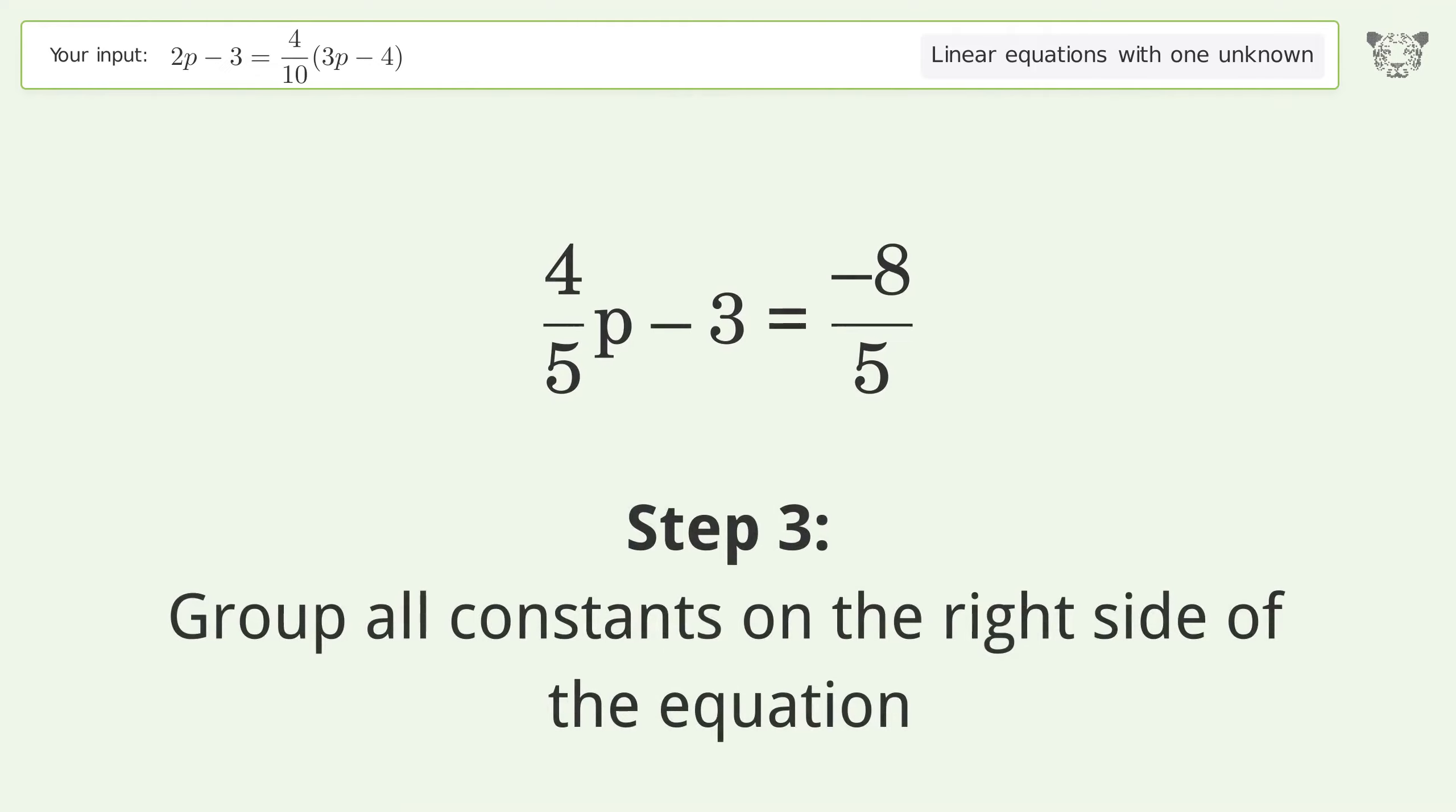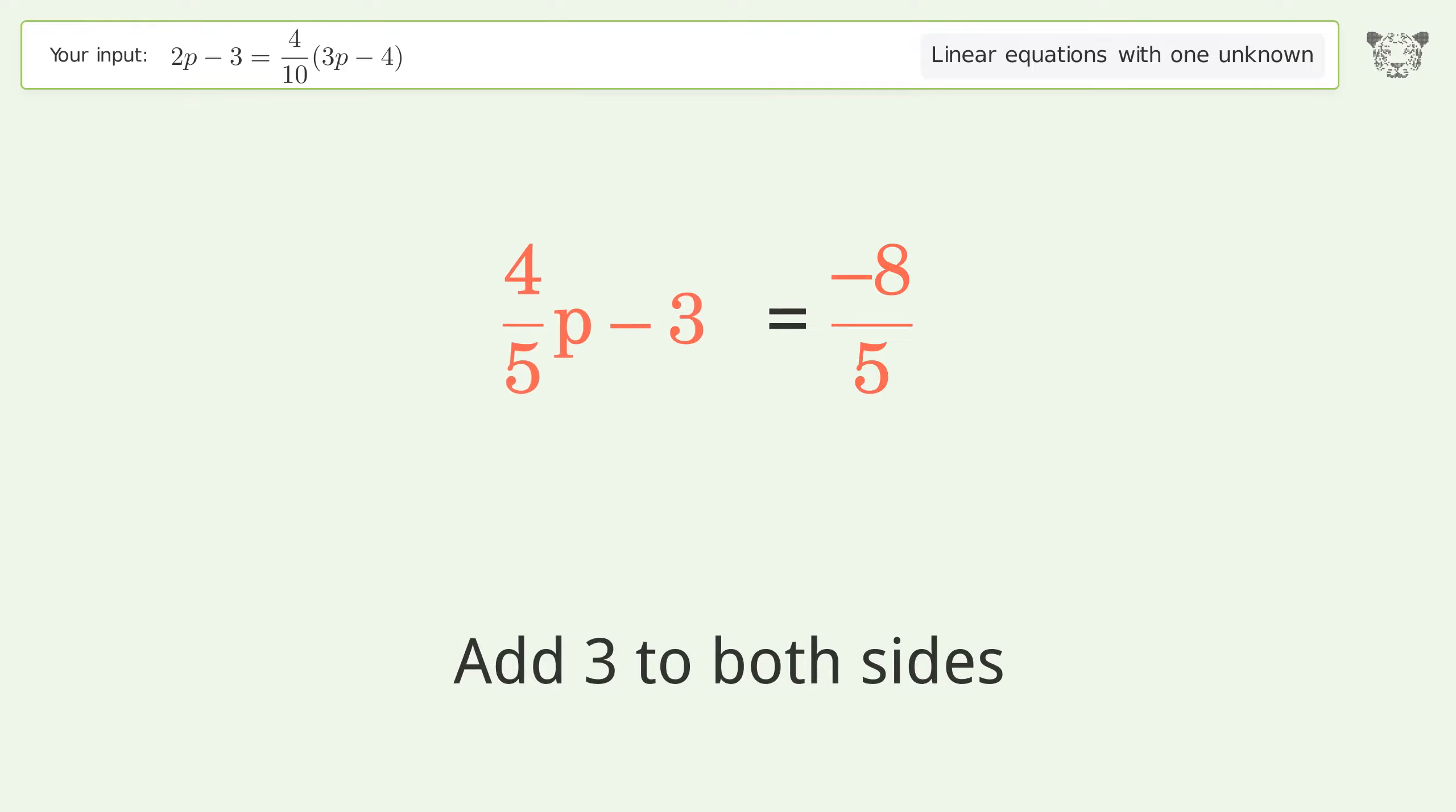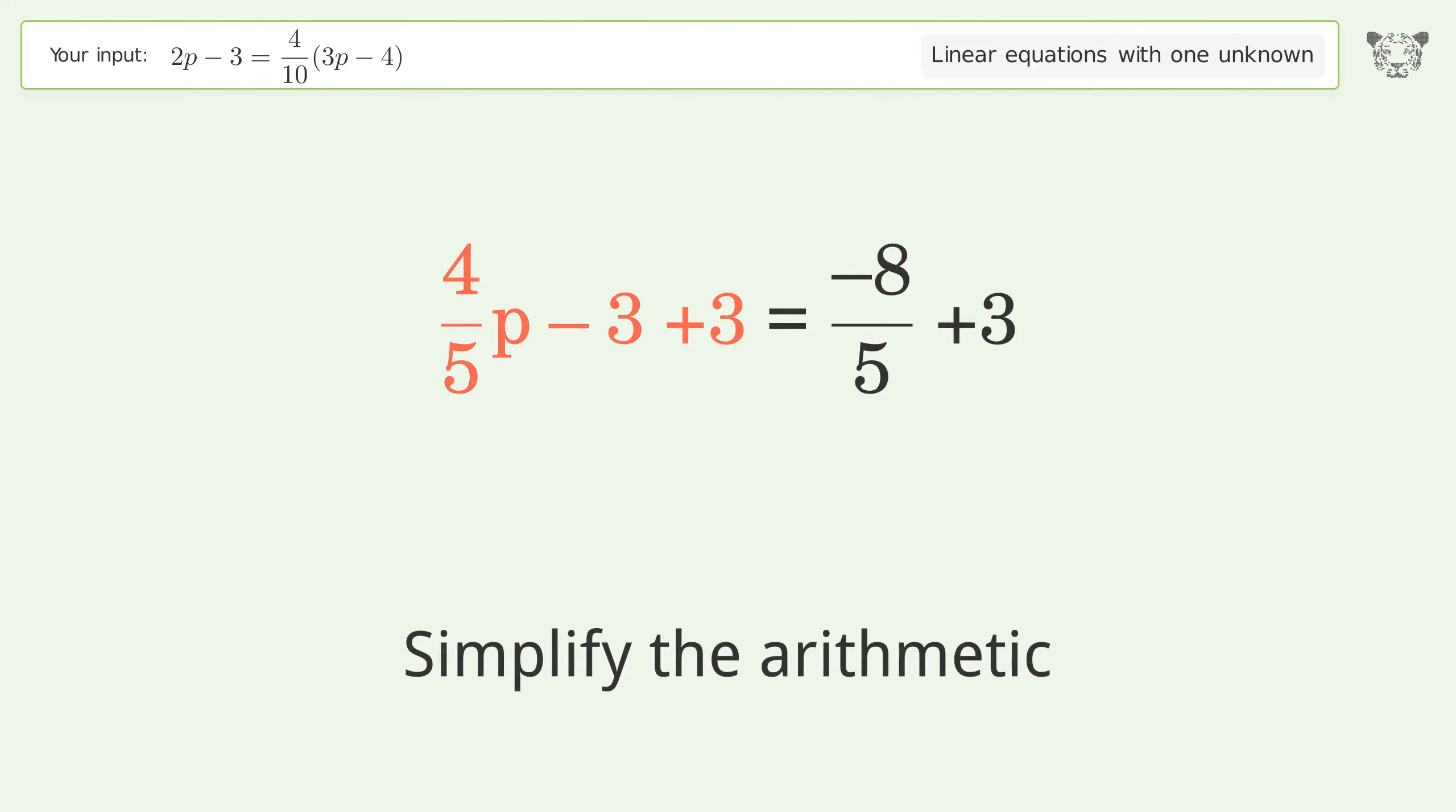Group all constants on the right side of the equation. Add 3 to both sides. Simplify the arithmetic.